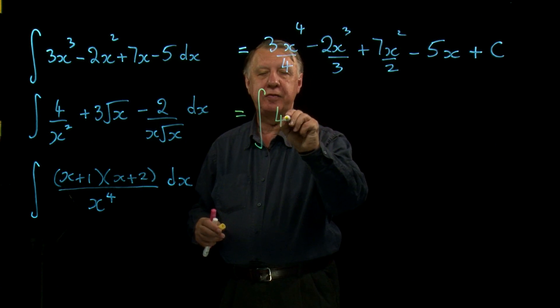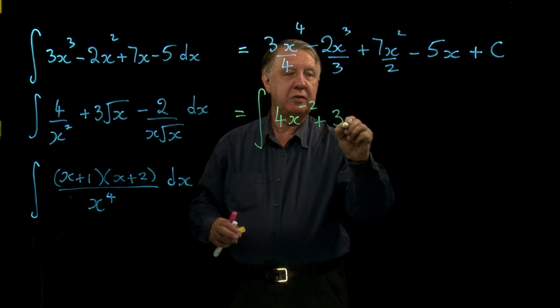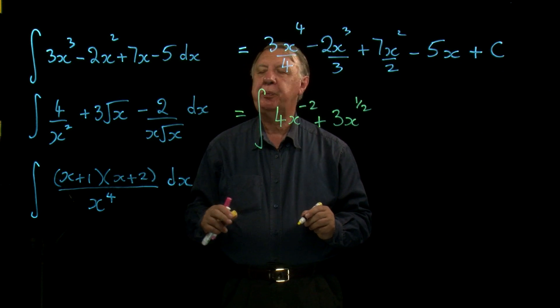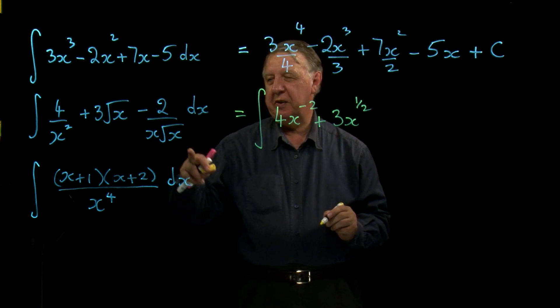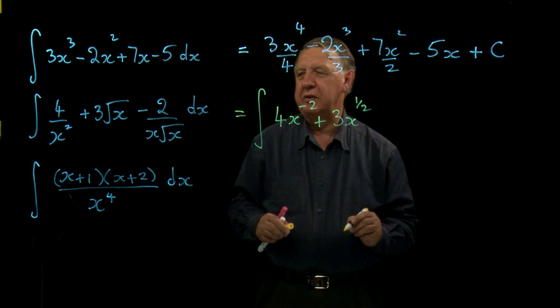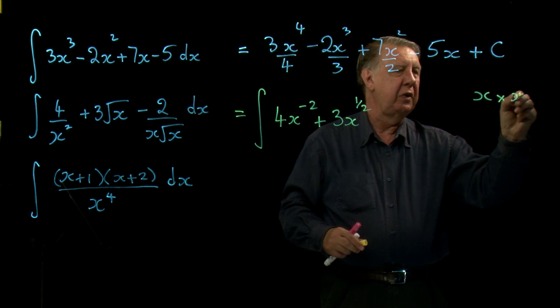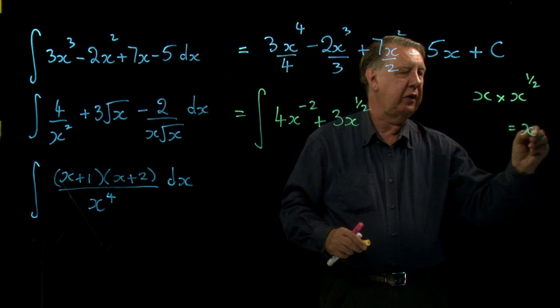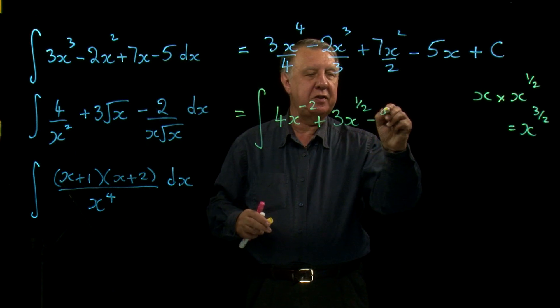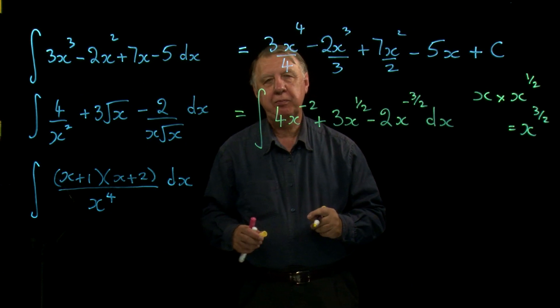4 over x squared. Well, we'll write that as 4x to the minus 2 plus 3 times the square root of x, x to the half. Now, this is something to watch out for. This is really 2 over x root x. So let's just have a look at x root x. That's x times x to the half, which is, of course, x to the one and a half, or x to the three over two. And it's on the bottom line, so it will become a negative power. And we can pop it up there as a negative three over two. And that's it. Now we're ready to go.